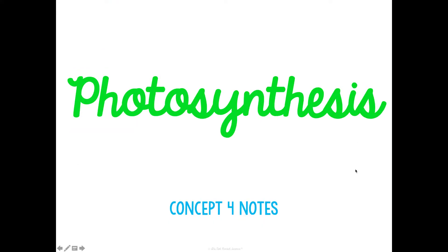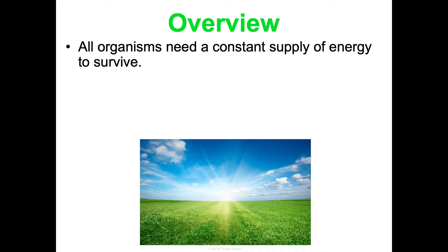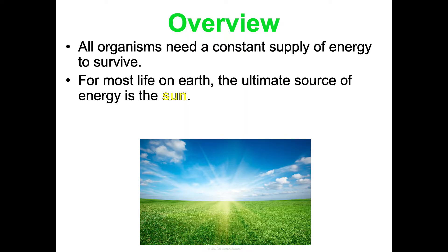This is concept four notes of our energy flow unit and we are going to talk about photosynthesis. We have talked about how all organisms need a constant supply of energy in order to survive. For pretty much all life on earth, that ultimate source of energy is the sun — the exception being those deep sea vent bacteria that can do chemosynthesis — but everything else will directly or indirectly get that energy from the sun.